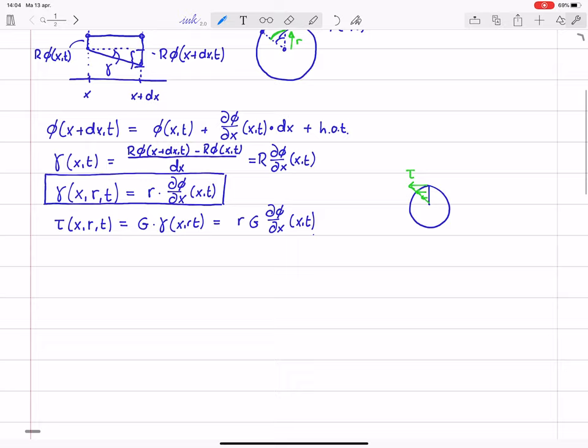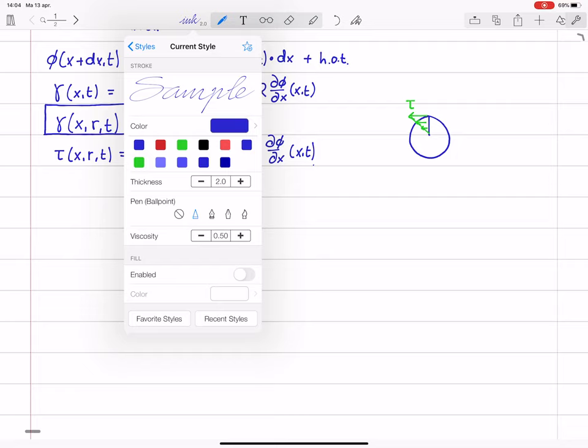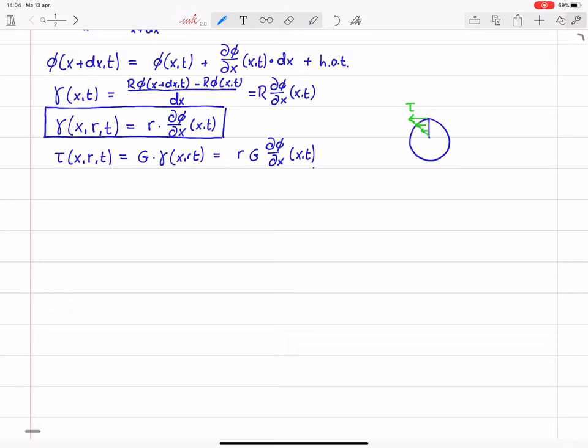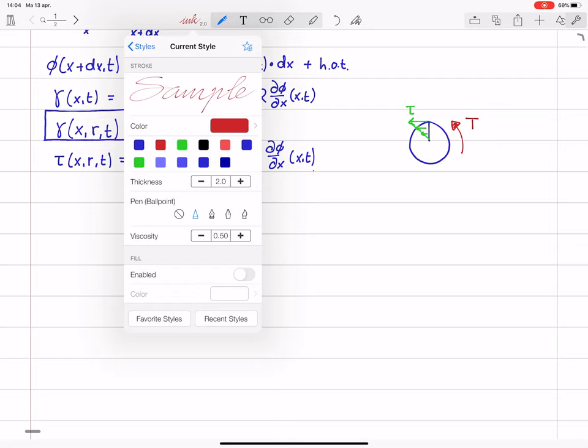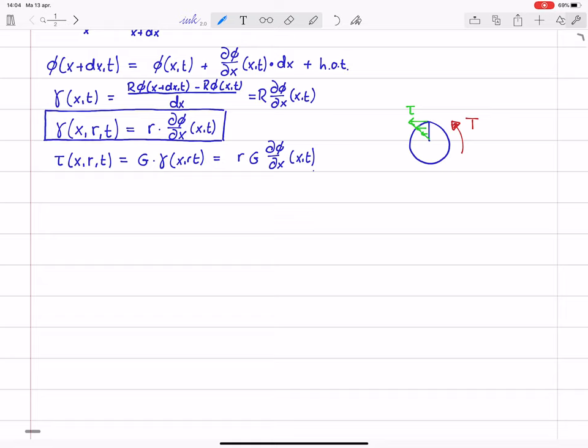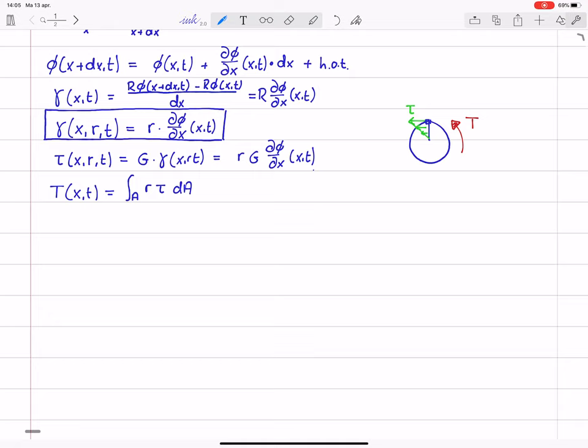Then what is also important is the relation between τ and the equivalent torsion moment. So τ varies like this in the cross section. As a result, there will be a torsion moment. Let me sketch that again. A torsion moment T. That is the static equivalent internal load. So this T, which varies with x and t, is equal to the integral over a cross section of r times τ dA. So basically it means that at the location r, there is a little surface dA, we have a stress τ, the contribution of this infinitesimal force τ times dA to the moment balance is r times τ. And we integrate over the entire cross sectional area.